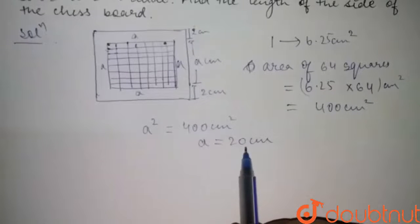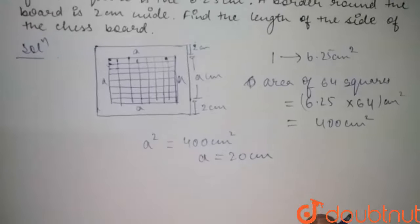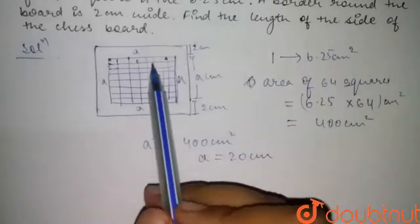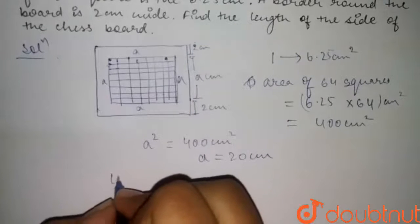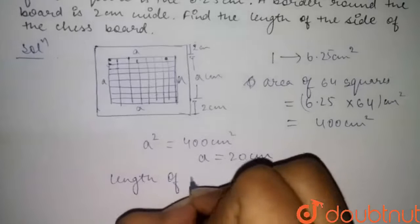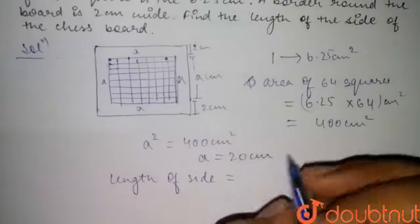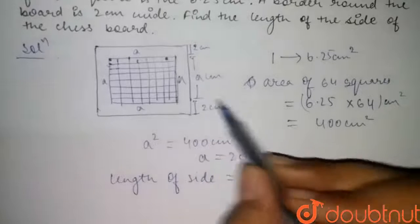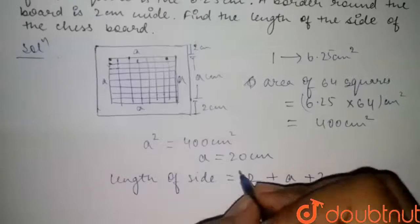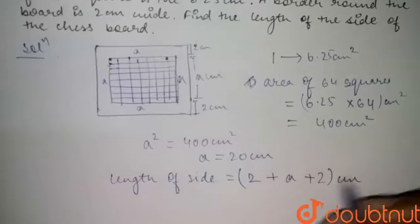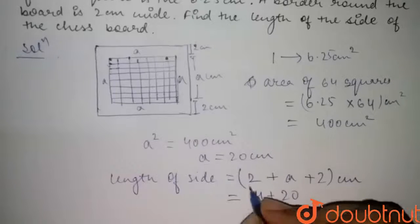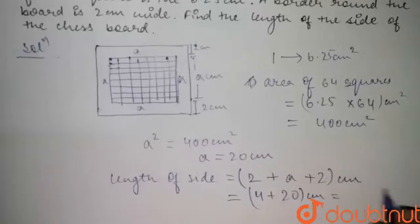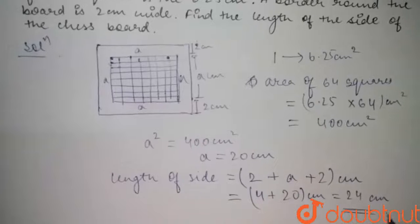We got the value of 'a' as 20 centimeters. Now we have to find the total length of the side of the chess board. The total length of the side equals 2 + a + 2 = 2 + 20 + 2 = 24 centimeters. So 24 centimeters is the final answer.